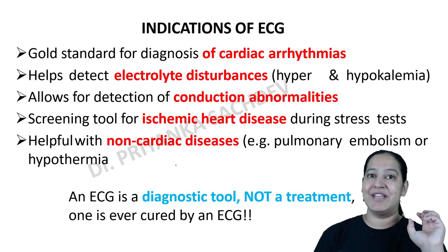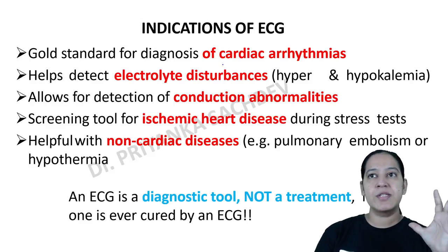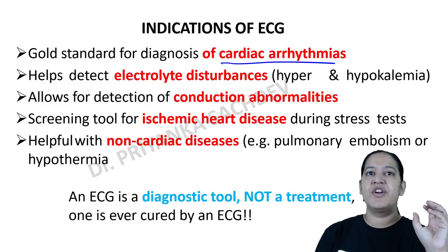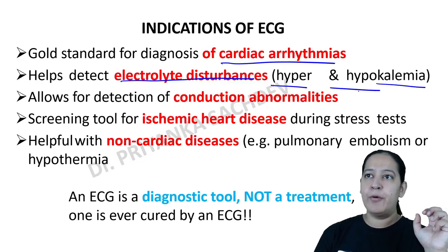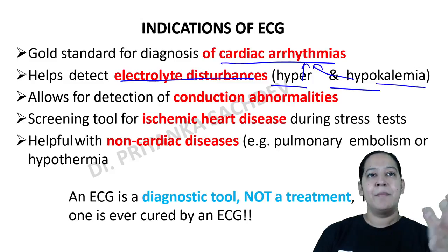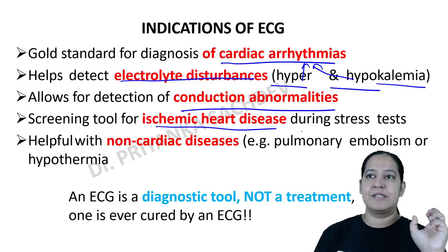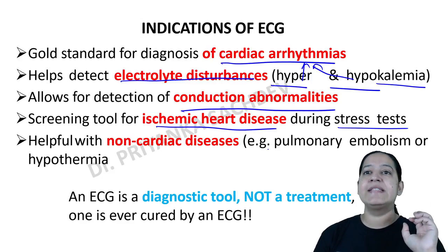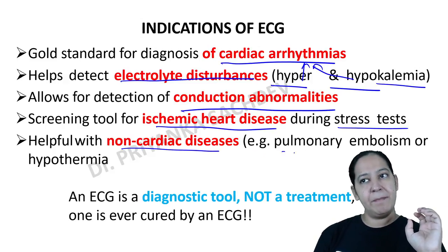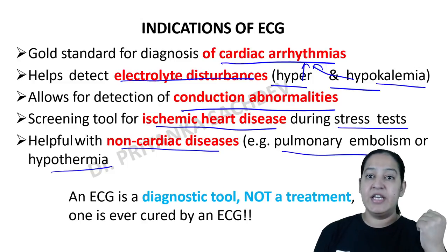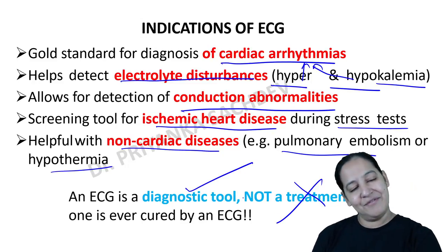Let's see the indications of ECG. ECG is used for diagnosis of cardiac arrhythmias, to detect electrolyte disturbances — mainly potassium disturbances like hyperkalemia or hypokalemia, which can lead to arrhythmias. It is also used for detection of conduction abnormalities, pacemaker abnormalities, ischemic heart disease, during stress tests, and in non-cardiac diseases like pulmonary embolism and hypothermia. ECG is a diagnostic tool, not a treatment.